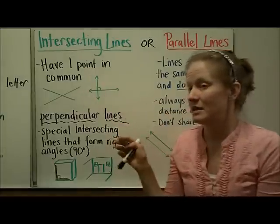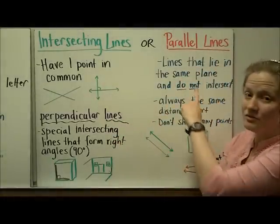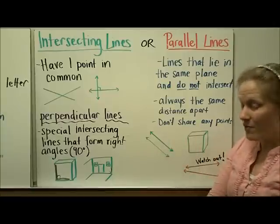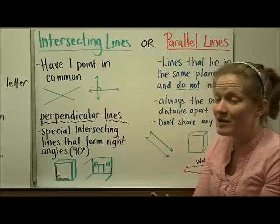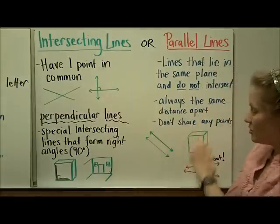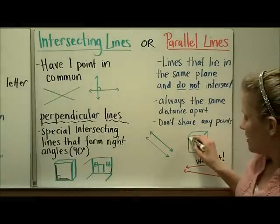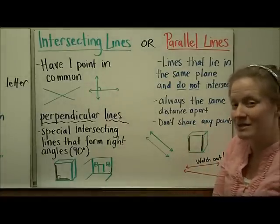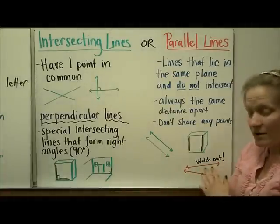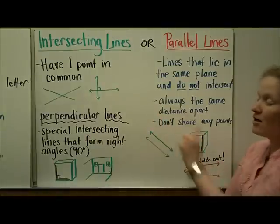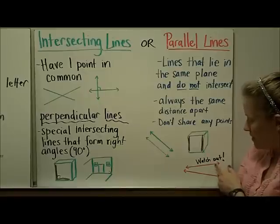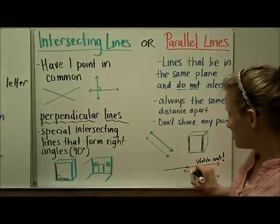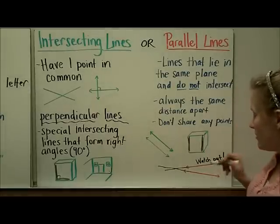Parallel lines are the opposite of intersecting lines. They are lines that lie in the same plane and do not intersect. Parallel lines are always the same distance apart from each other and they don't share any points. A good example is the two sides of a road being parallel. Be careful not to get tricked — some lines may look parallel because they don't intersect in the drawing, but if they are not always the same distance apart and would eventually meet if extended, they are not parallel lines.